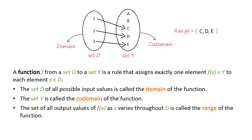In this example, the range consists of the members c, d, and e. Note that the range may not include every element in the set Y. The range is a subset of the codomain. It may or may not be equal to the codomain.